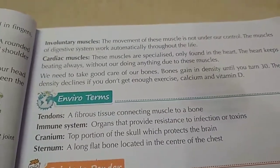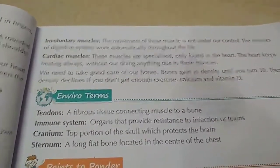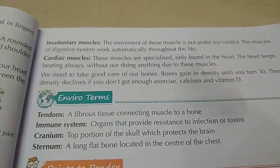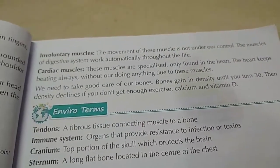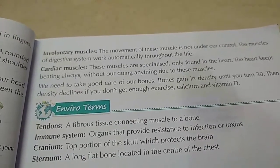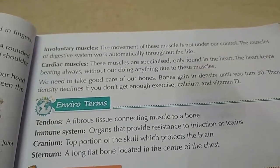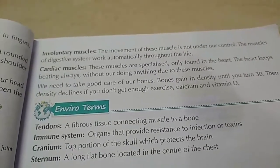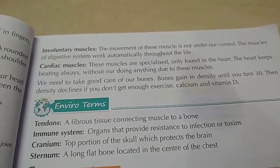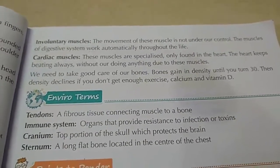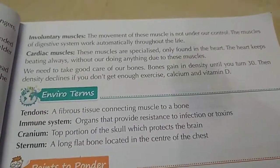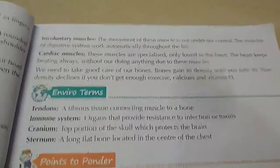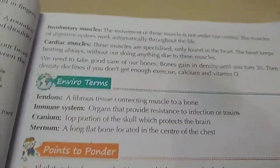The last type is cardiac muscles. These muscles are specialized and are only found in the heart. The heart keeps beating always without stopping throughout life due to these muscles. We need to take care of our bones — bones gain density until you turn 30, then density declines if you don't get enough exercise, calcium, and vitamin D.